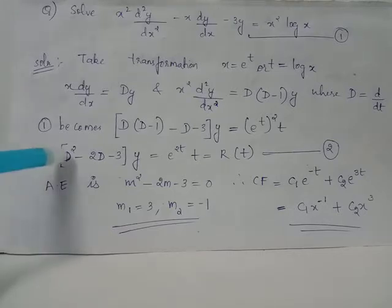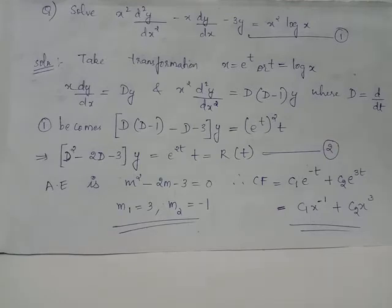This differential equation, numbered as 2, is a differential equation with constant coefficients and has independent variable t. It has auxiliary equation m squared minus 2m minus 3 equals 0. We obtain real and distinct roots m1 equals 3 and m2 equals minus 1. Hence, the complementary function for equation 2 will be c1 e raised to negative t plus c2 e raised to 3t.